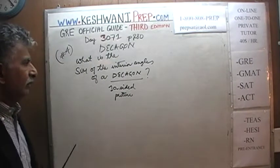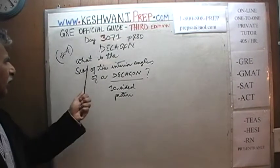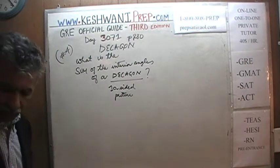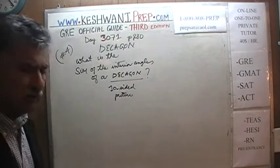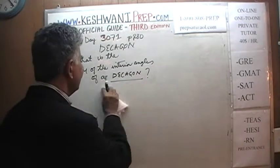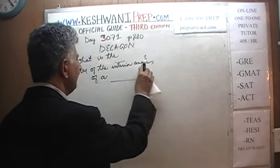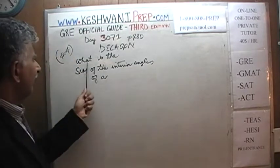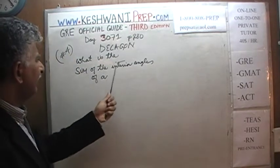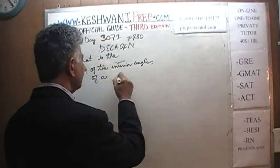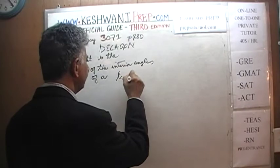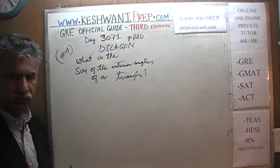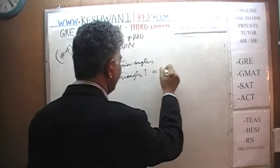The question is: what is the sum of the interior angles of a decagon? Before we worry about that, let's start with something we know. What is the sum of the interior angles of a triangle? Well, that's a very silly question — of course the answer is 180.